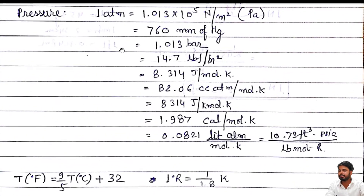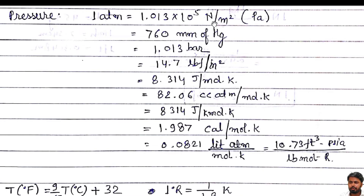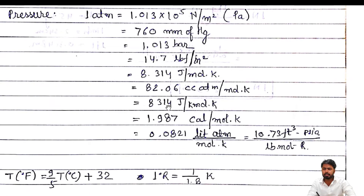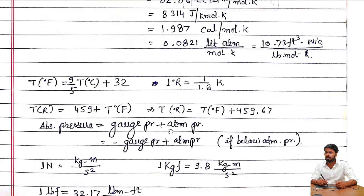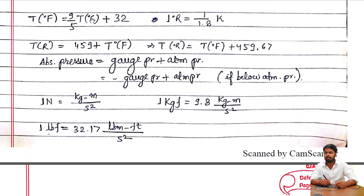For pressure, one atmosphere is equal to 1.013 × 10⁵ Newton per meter square, which is equal to Pascal. You must remember these units and know their conversions. The temperature relation: temperature in Fahrenheit equals (9/5) × temperature in Celsius + 32. One Rankine equals (1/1.8) Kelvin. Temperature in Rankine equals 459 plus temperature in Fahrenheit, with the exact value being 459.67.